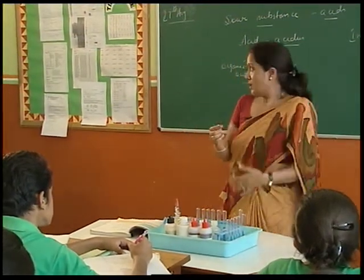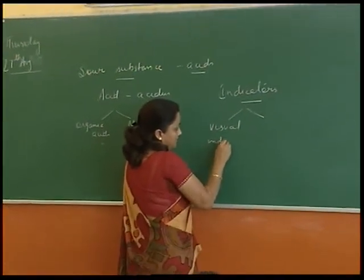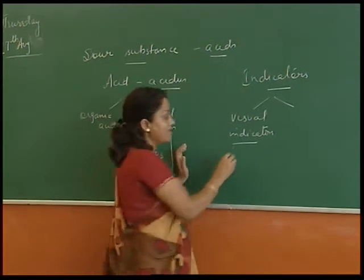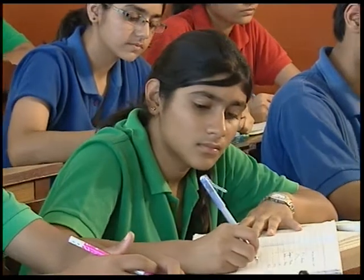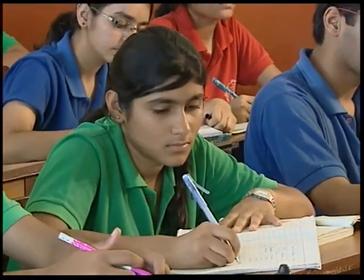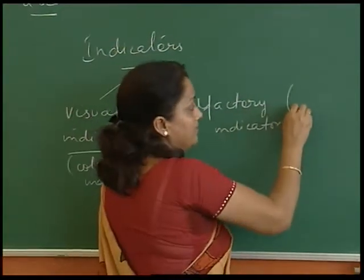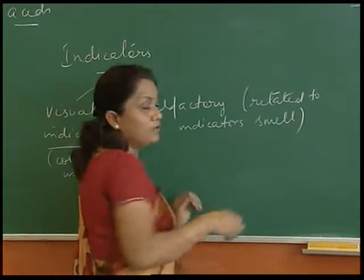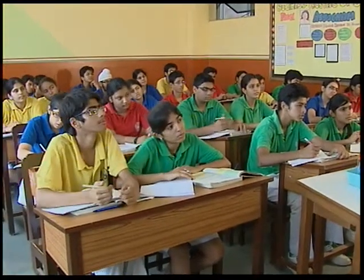Indicators tell us whether a substance is acidic, basic, or neutral. Indicators are classified into two categories: visual indicators, which change color — you see the color change and identify whether the substance is an acid — and olfactory indicators, which are related to the sense of smell. You smell that particular substance and if it changes its smell, it indicates whether it is acidic or basic.